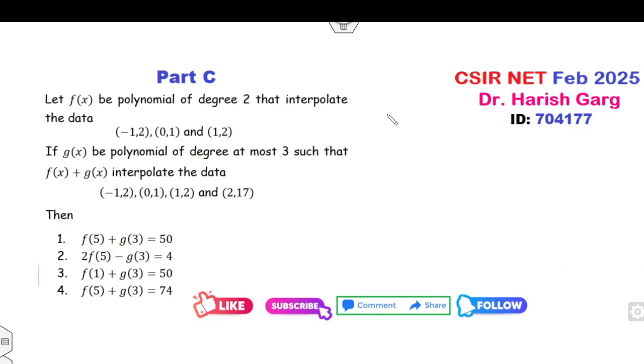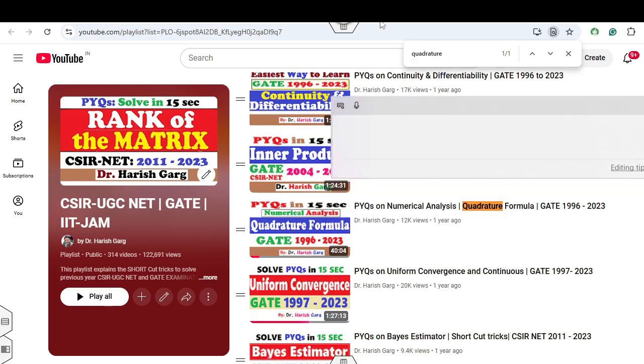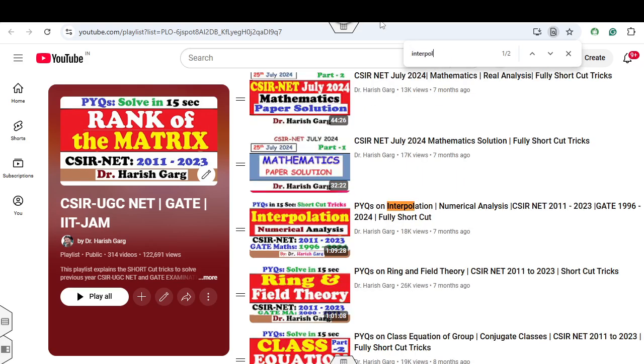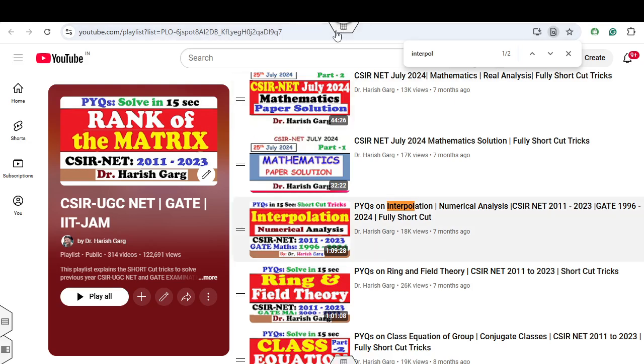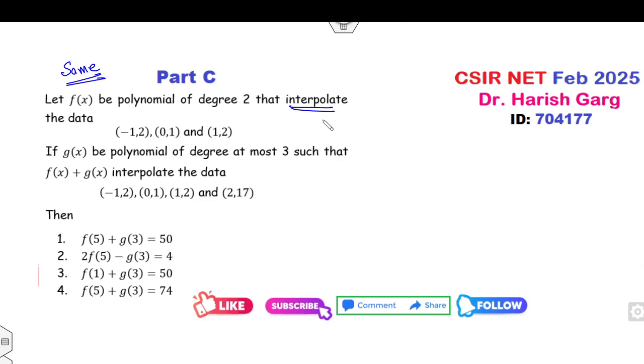Now look at the second question. Second question is related to the interpolations and the same question if you look about this interpolation of the numerical analysis, the same question, same statement is already uploaded in this PY question series. You can see I had uploaded a fully shortcut fix. How you can solve whenever you have the quadrature formula or whenever you have the interpolations, write the pair of x and y.